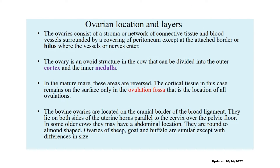The ovaries consist of stroma — a network of connective tissue and blood vessels. The vessels and nerves enter the ovary through the hilus. In terms of the layers, we have two regions of the ovary: the medulla and the cortex. The cortex is usually on the outer side and the medulla is on the inner side. For the mature mare, this is reversed — the medulla is on the outside and the cortex is on the inside.